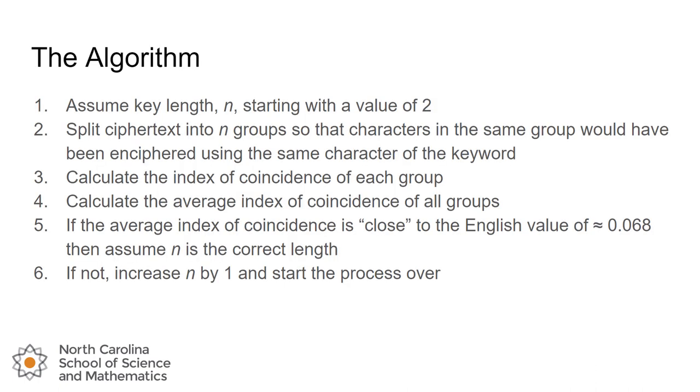So the algorithm that we just used is that we're going to assume some key length, we'll call that n, and we'll start with a value of 2. Then we'll split up our cipher text into n groups in a way that the characters in each group would have been enciphered using the same character from the keyword. Then we calculate the index of coincidence for each one of those groups, average those together to get an average index of coincidence for all of the groups. If our index of coincidence, the average value, is close enough to the English value of around 0.068, then we'll assume that that guessed value of n was the correct length. If not, we'll increase the value of n by 1 and start that process over again, continuing until we get to a correct English value.